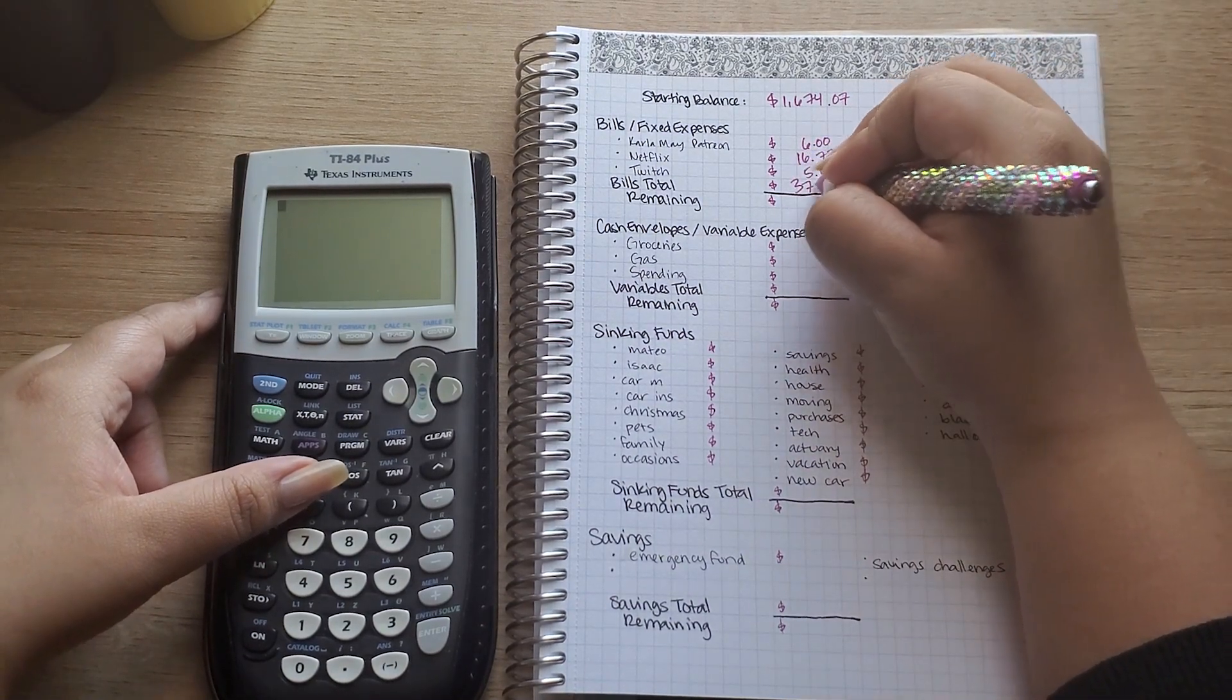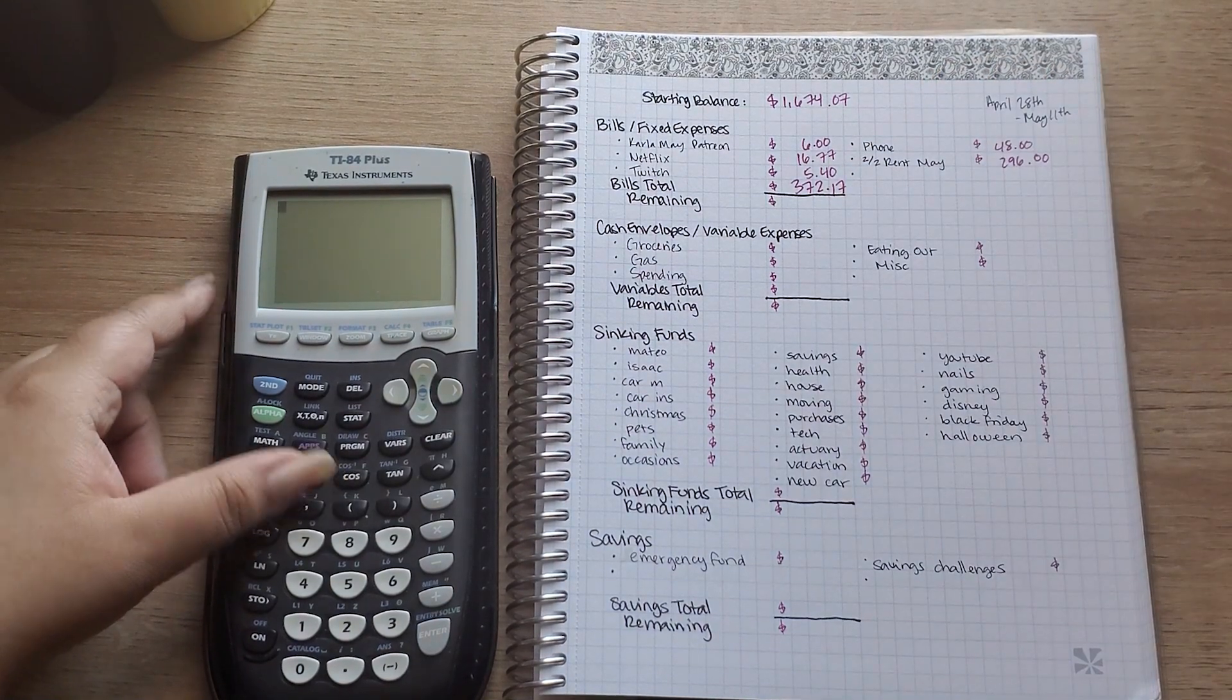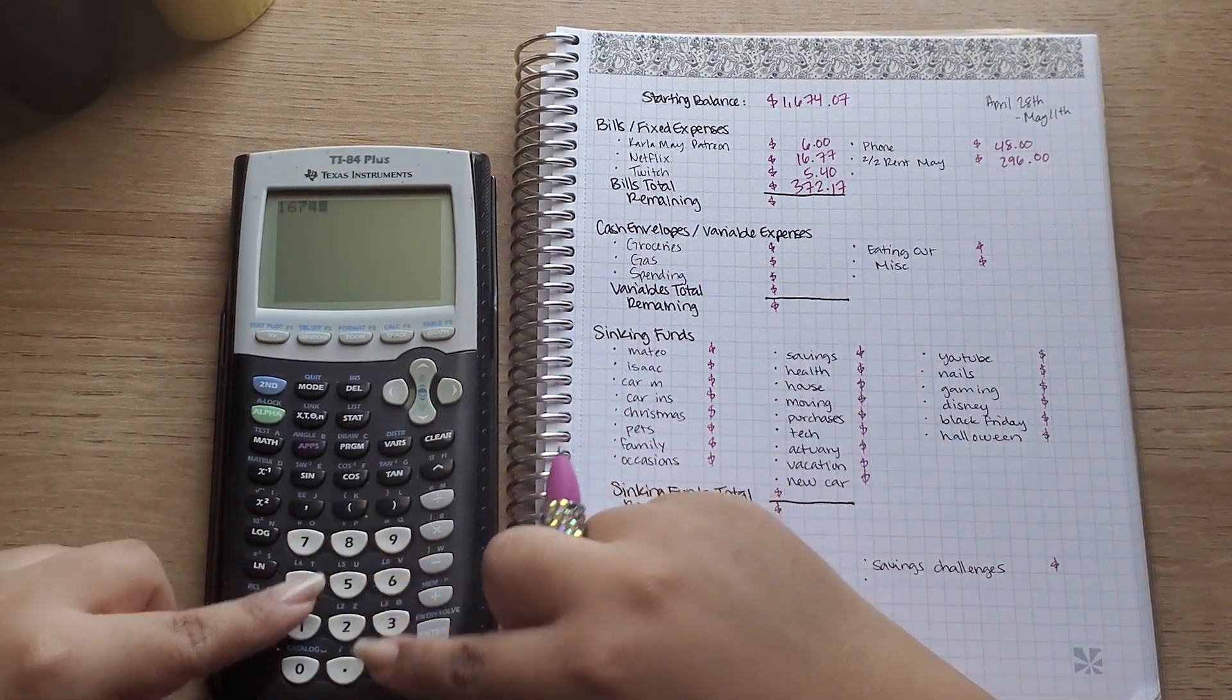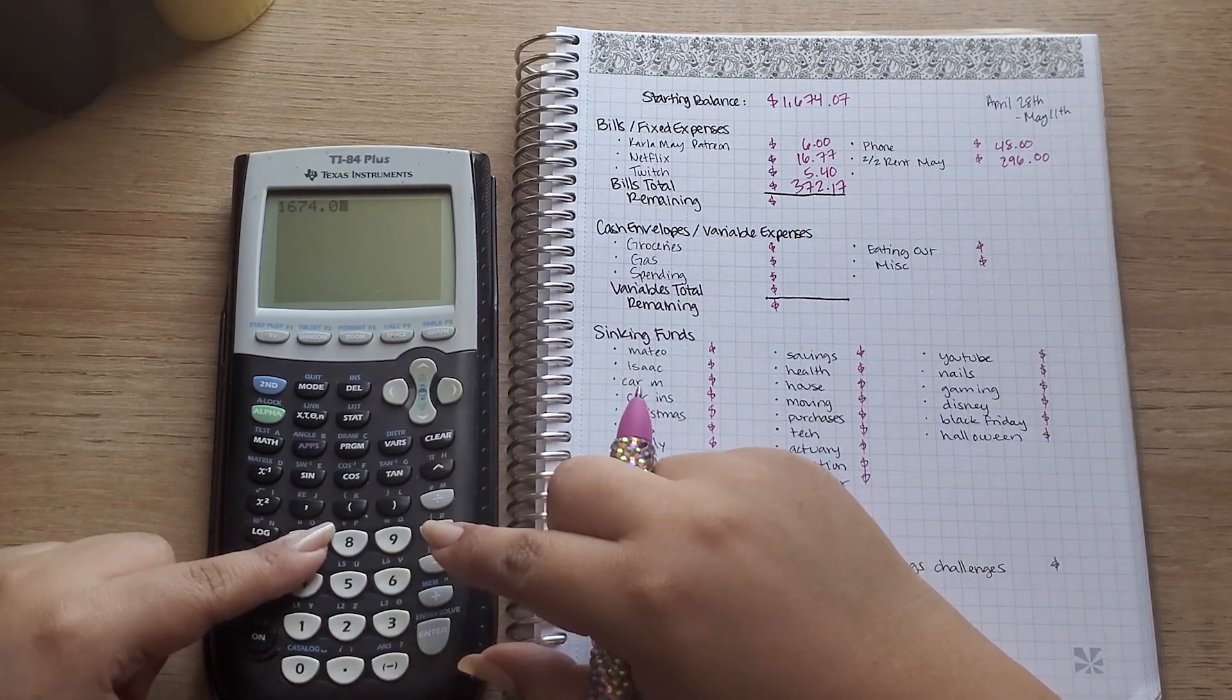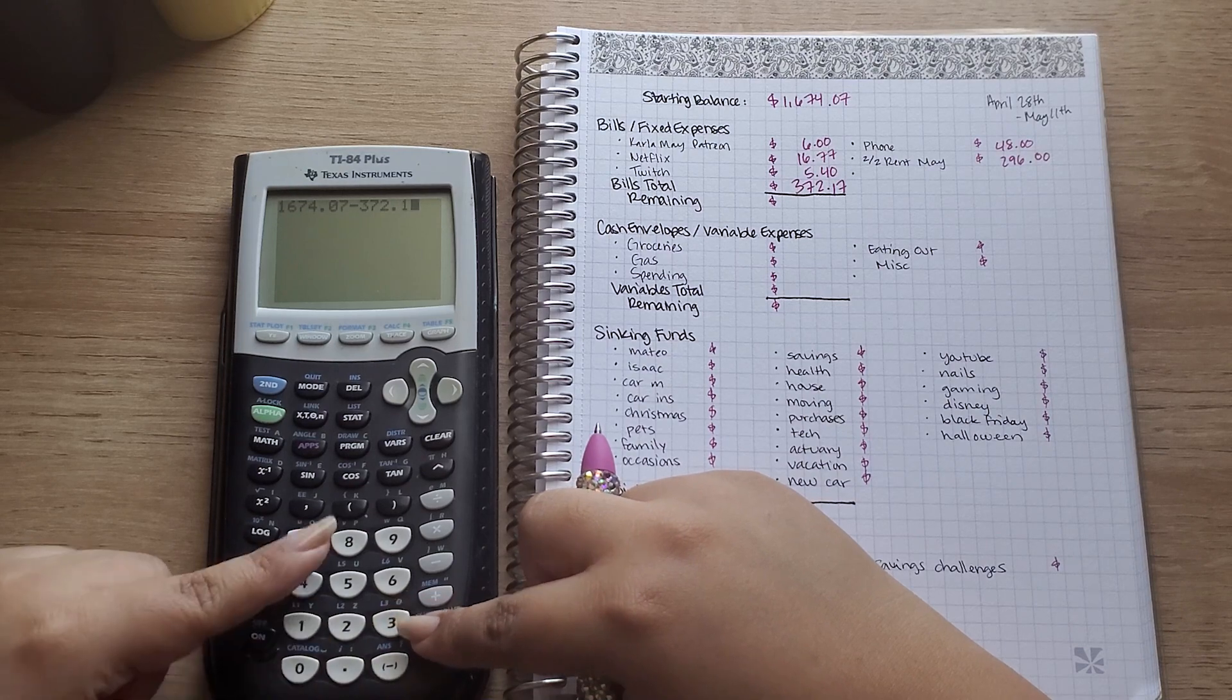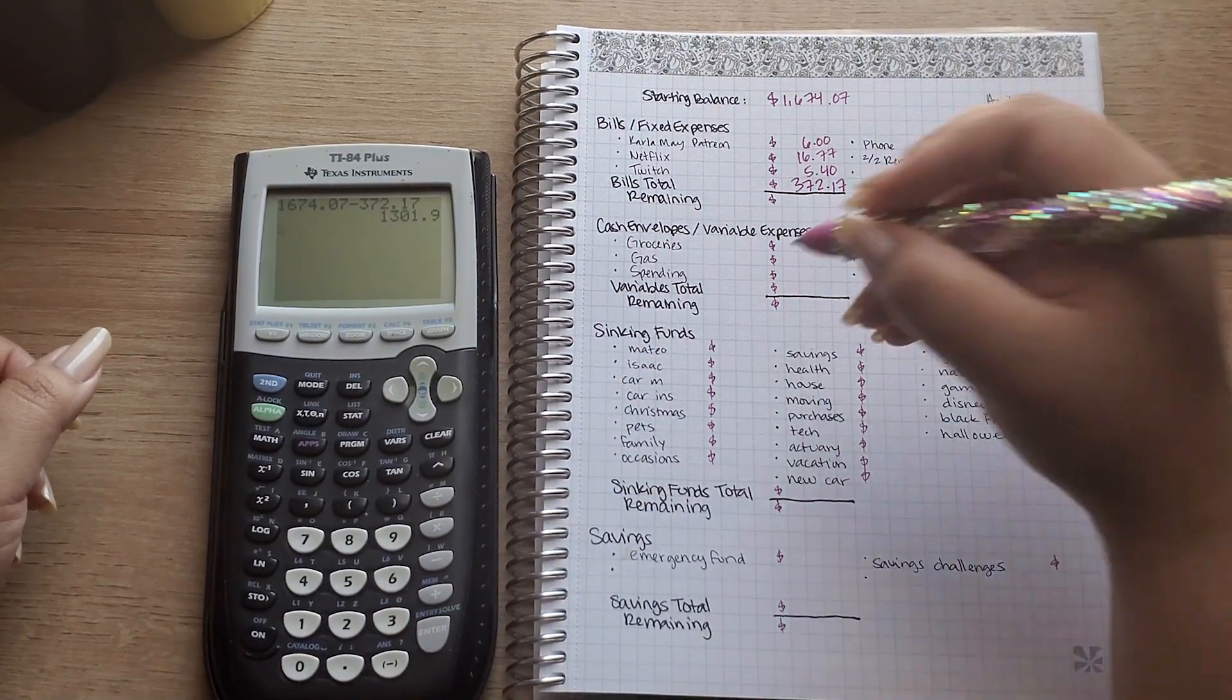And I believe that's all the bills. So the total amount for these bills is $372.17. And now that we have that we can subtract minus $372.17, gives me $1,301.98.